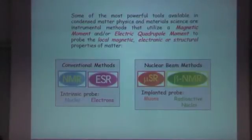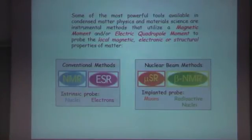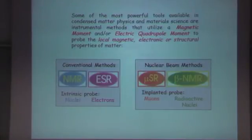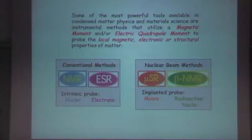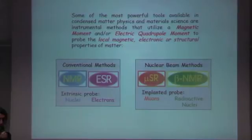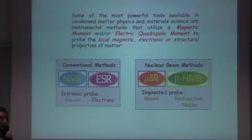The technique fits more in the general category of nuclear magnetic resonance, where you basically use a magnetic moment to investigate and probe local magnetic fields, electronic structure, and properties of matter. There is conventional magnetic resonance — nuclear magnetic resonance or ESR — where the probe is intrinsic, meaning you use nuclei or electrons of the material itself that you're studying. And then there is unconventional NMR, which is where µSR, the technique I want to talk about, belongs. In that case, you don't use an intrinsic probe but an external implanted probe — muons in the case of µSR.